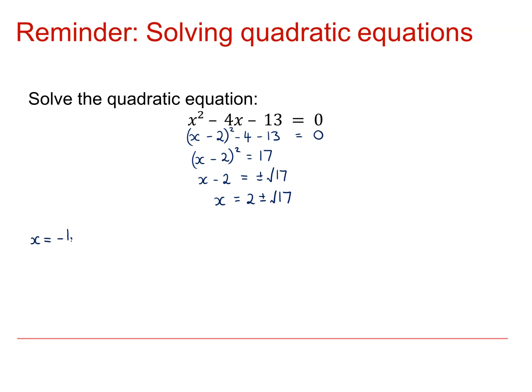Remember the formula for solving a quadratic equation? x equals minus b plus or minus the square root of b squared minus 4ac all over 2a. The discriminant is this bit here inside the square root sign.